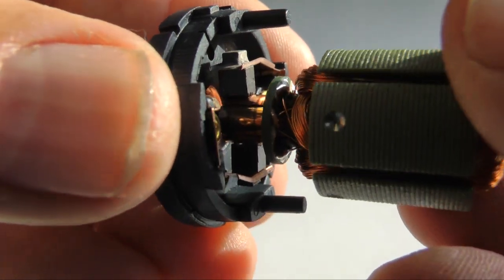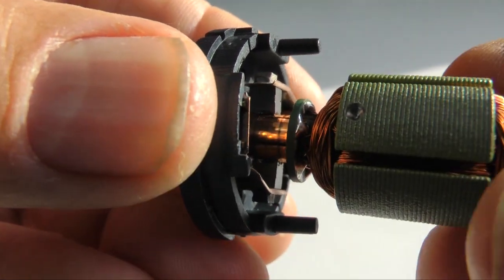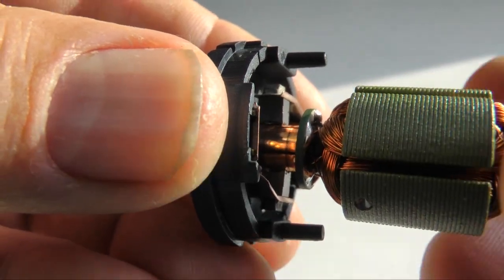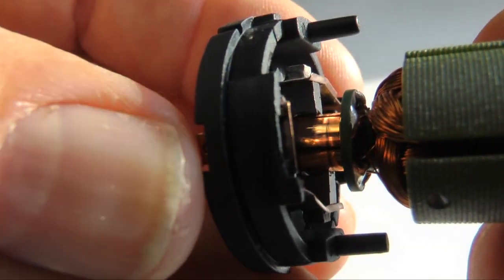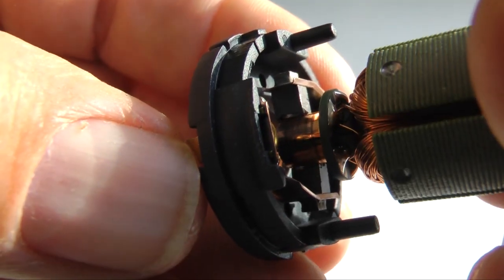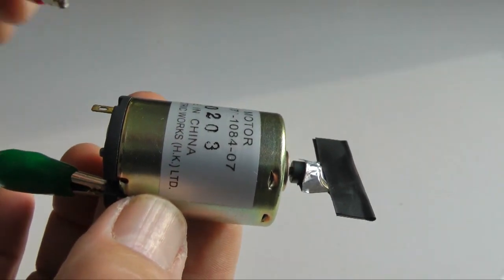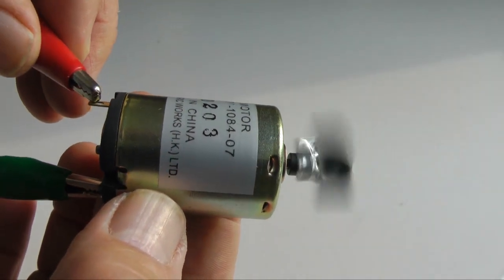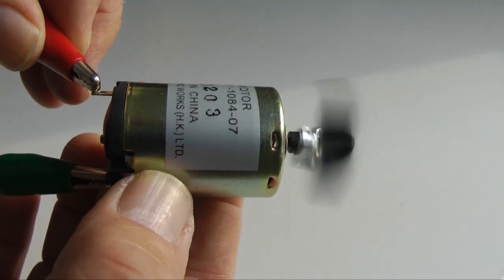The rotating contacts flip the direction of current flow, which also flips the polarity of the magnetic field, resulting in a powerful push-pull between the two fields. Similar technology can be found in motors powering everything from toys to locomotives.